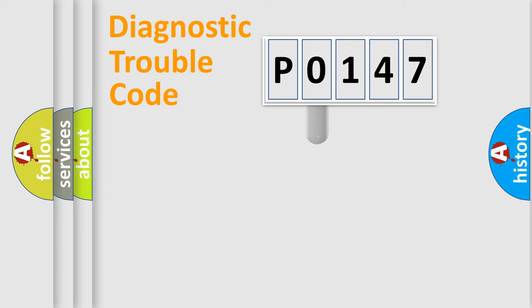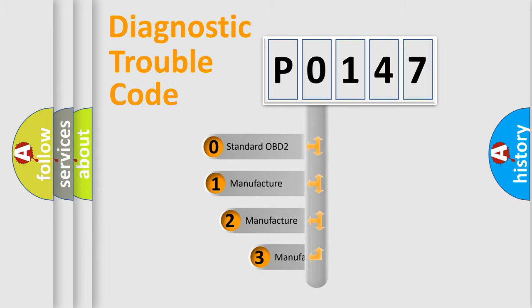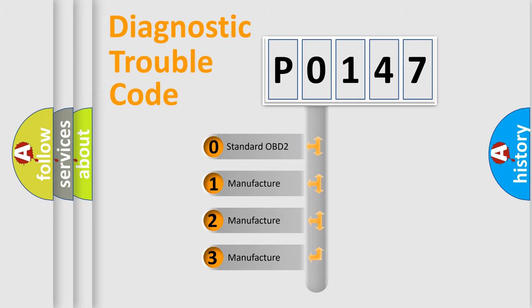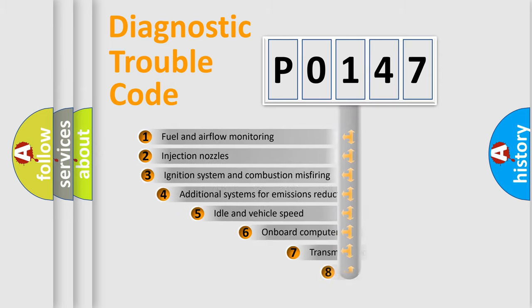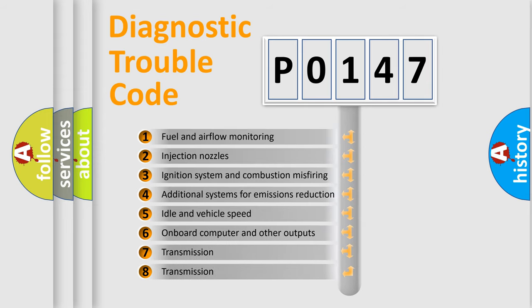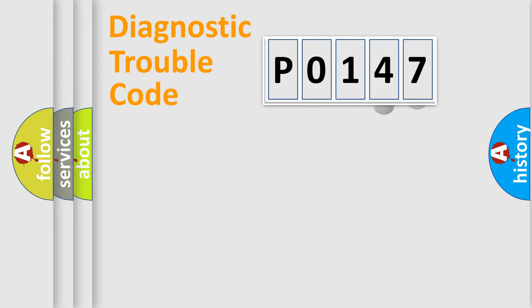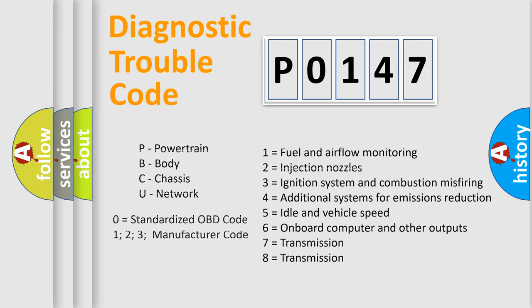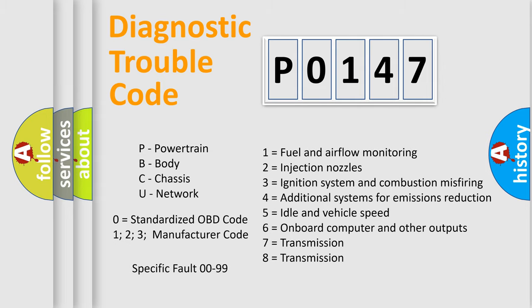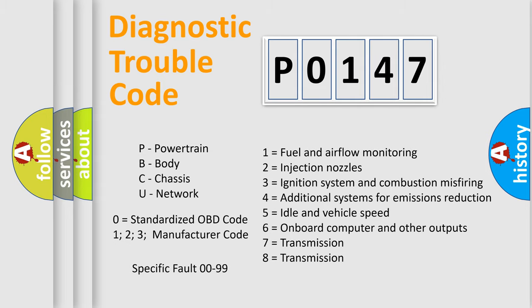This distribution is defined in the first character of the code. If the second character is expressed as 0, it is a standardized error. In the case of numbers 1, 2, or 3, it is a more specific expression of a car-specific error. The third character specifies a subset of errors. The distribution shown is valid only for the standardized DTC code. Only the last two characters define the specific fault of the group, and this division is valid only if the second character code is expressed by the number 0.